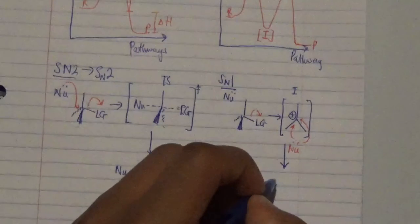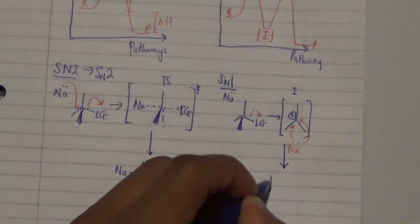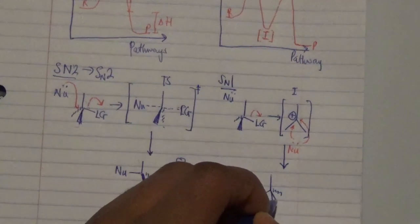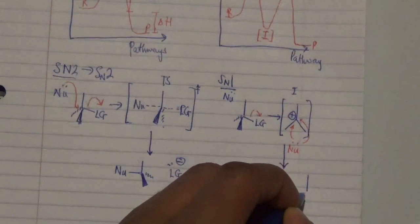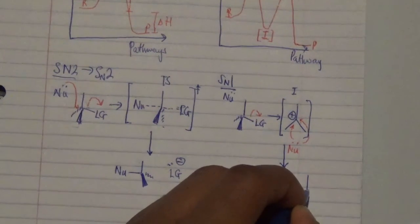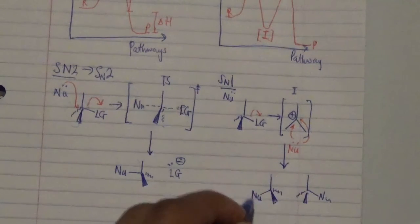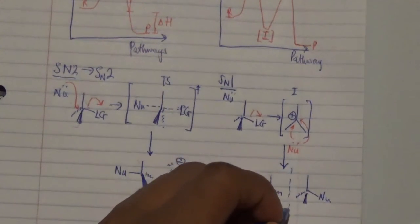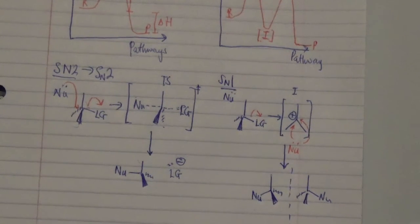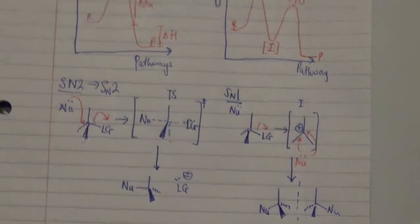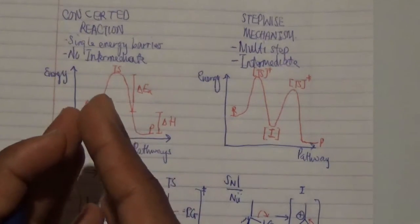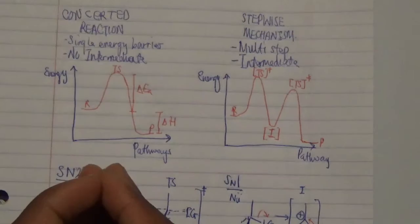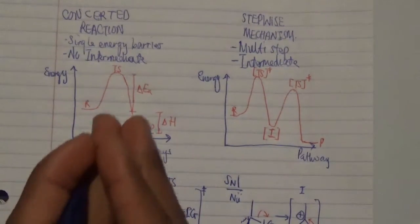The final product of SN1 is not stereospecific at all, because you form two products. One product may be favored by temperature or pressure, or you can form another product where the nucleophile is on the opposite side — essentially mirror images of each other, which are enantiomers. That covers the concept of concerted reactions versus stepwise mechanisms, and the concerted reaction plays a key role in understanding cycloaddition.